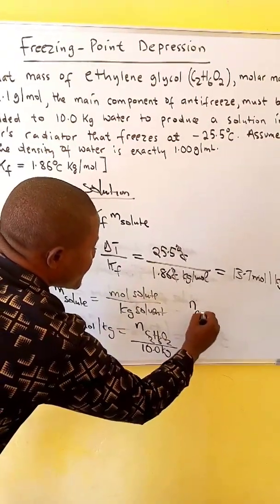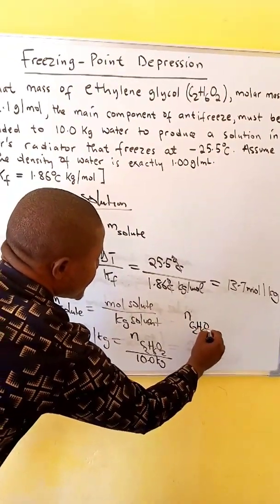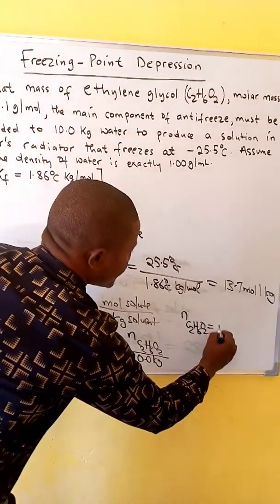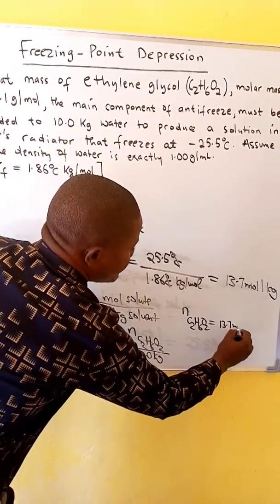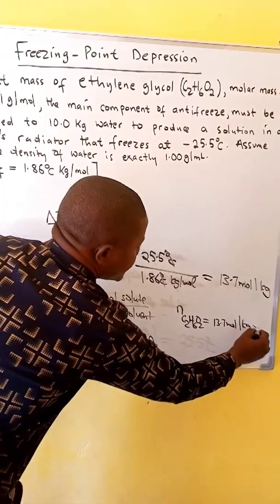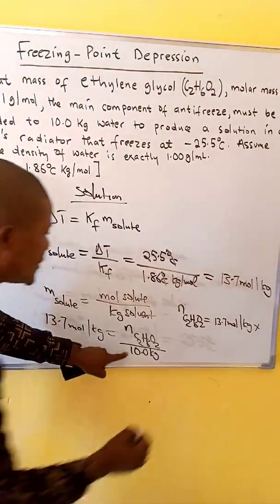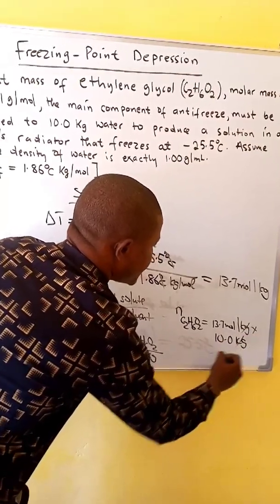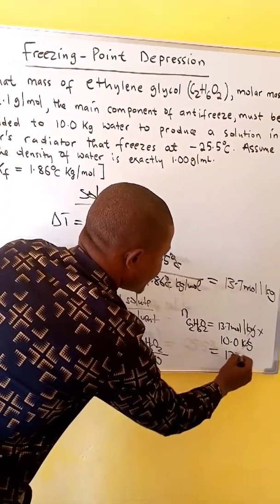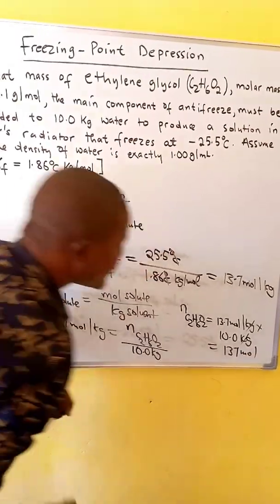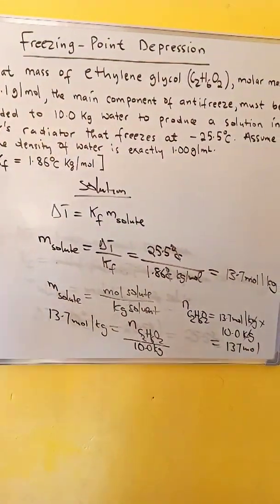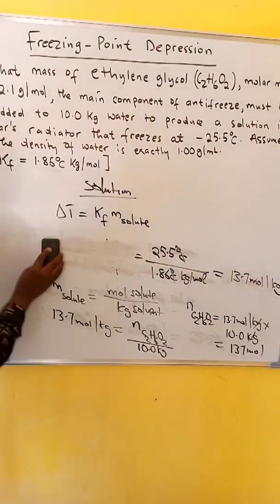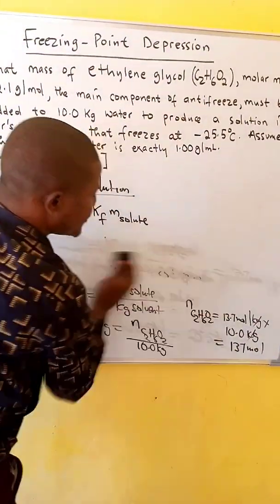So to find the moles of ethylene glycol, we'll cross-multiply. Moles of ethylene glycol will equal to molality 13.7 mole per kg times 10.0 kg. The kgs will cancel.